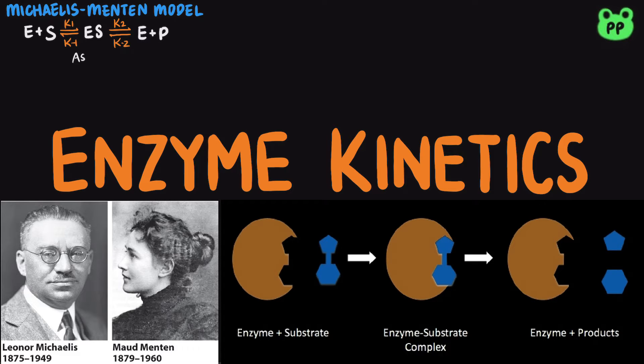The Michaelis-Menten model relies on several assumptions. First, the binding of enzyme and substrate is assumed to be reversible. Second, the second step is assumed to be the slower rate limiting step.